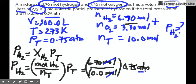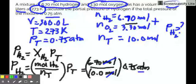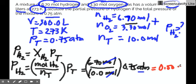And whatever is the unit of your total pressure, that becomes the unit of your pH2. So you can get an answer, putting that in the calculator. So 6.70 divided by 10 times 0.75, we get the answer to be 0.50 atmosphere.